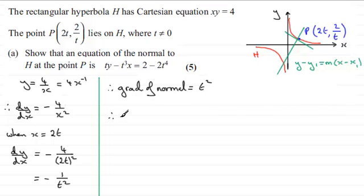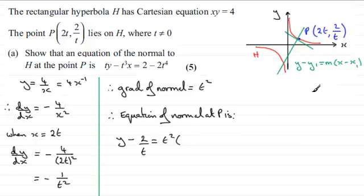So we've got the gradient of normal, we can now say that the equation of the normal at P is y minus y1, y1 is 2 over t, equals m the gradient, which we've seen is t squared, multiplied by x minus x1, x1 is 2t.